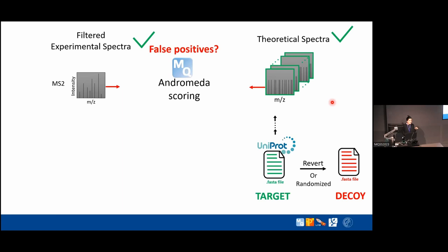You don't need to create the decoy database manually — MaxQuant does it for you automatically when you provide the FASTA file. There is a parameter in MaxQuant controlling how the decoy database is created; by default it uses protein reversal. MaxQuant then creates theoretical spectra from both the target and decoy databases and uses both for Andromeda scoring.